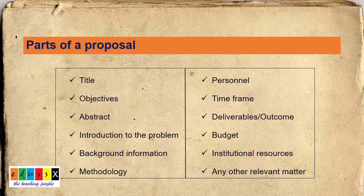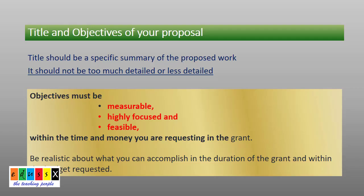These are the parts of a research proposal — this is tentative and may change for different funding agencies, but most important sections are included. The title of the project proposal must be a specific summary of the proposed work. On reading the title, one must understand what you are going to do. A detailed title must be avoided; it must be brief and at the same time informative.